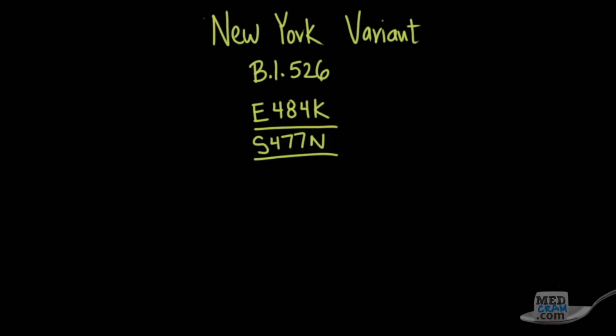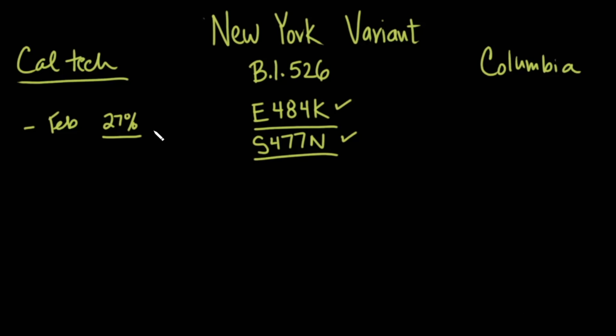Now, there are actually two teams that looked at this. One team was from Caltech, and the other one was from Columbia. We'll give links to the papers available to both of those. The Caltech group was basically scanning the databases, looking at different mutations, and they noticed these mutations specifically, the E484K and the S477N. They noticed that, at least in New York, that by mid-February, about 27 percent of the isolates in New York were containing these mutations.